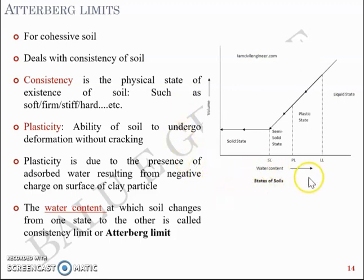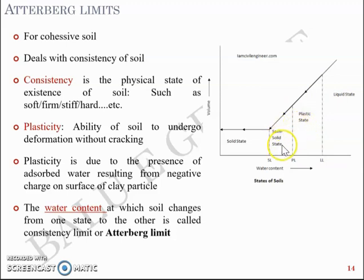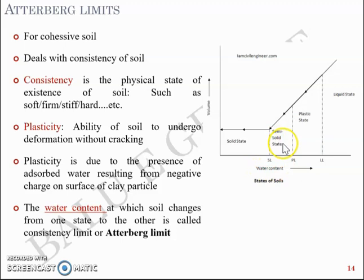For example, plotting water content on the x-axis and volume on the y-axis: soil is in the liquid state at high water content, changes to plastic state on drying, then to semi-solid state with further drying, and finally to solid state. The boundary water contents marking these transitions are: liquid limit (liquid to plastic state), plastic limit (plastic to semi-solid state), and shrinkage limit (semi-solid to solid state).